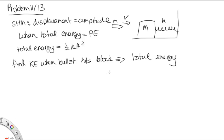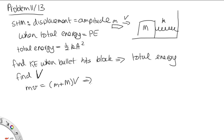To find the kinetic energy, we need to know the velocity of the system at that point. It would be unreasonable to assume all the kinetic energy from the bullet is directly transferred, but conservation of momentum holds. So we use conservation of momentum to find V, the velocity of the bullet plus block when it just starts to move. The initial momentum m·v equals the final momentum (m + M)·V, so V = mv / (m + M).